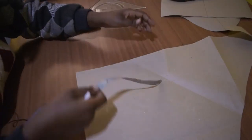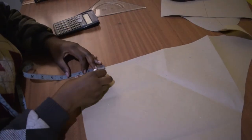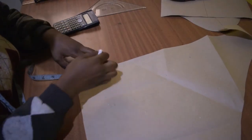Draw two lines at a 90 degree angle. In this case I'll just use these edges, and then measure the 3.6 out from this point.